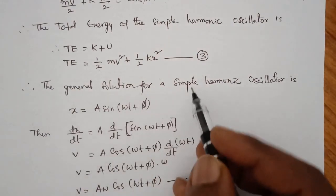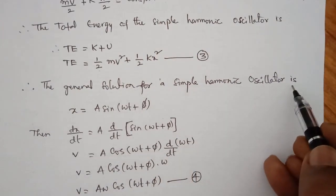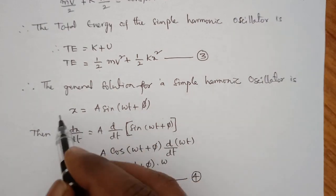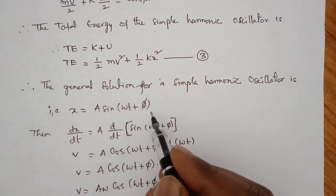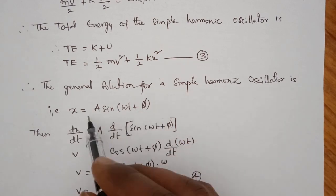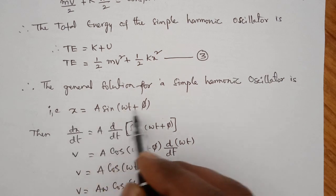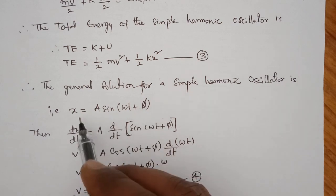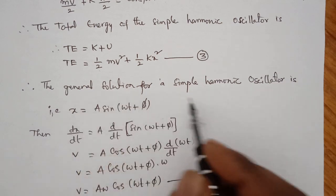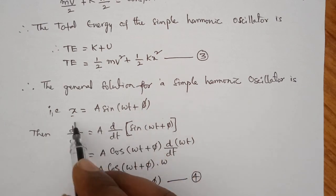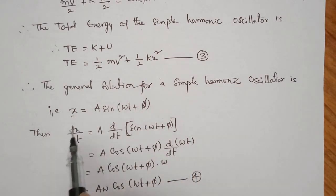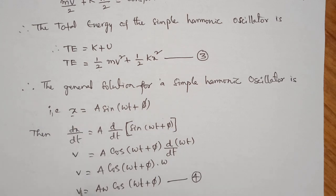The general solution for a simple harmonic oscillator is x equals A sin of omega t plus phi. This is the displacement of the wave, also called the general solution of the simple harmonic oscillator.